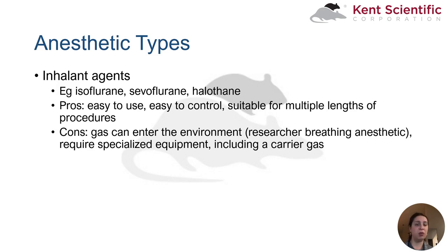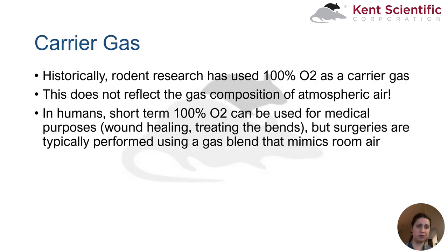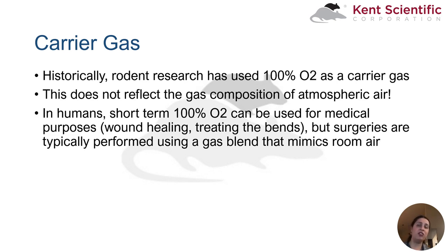Whereas the vehicles of many injectable agents are understood to cause minimal, if any, off-target effects, many researchers are unclear regarding any off-target effects of carrier gases used. Interestingly, although many rodent studies use 100% oxygen as a carrier gas, this does not reflect the composition of atmospheric air. In fact, even during surgical procedures, although there are benefits for giving humans 100% oxygen — for example, divers with the bends or needing wound healing — when humans undergo surgical procedures, they are almost always given compressed medical grade gas which mimics room air composition. So what could this discrepancy mean if you are using 100% oxygen in rodent surgeries, but this isn't reflecting what humans are usually exposed to?